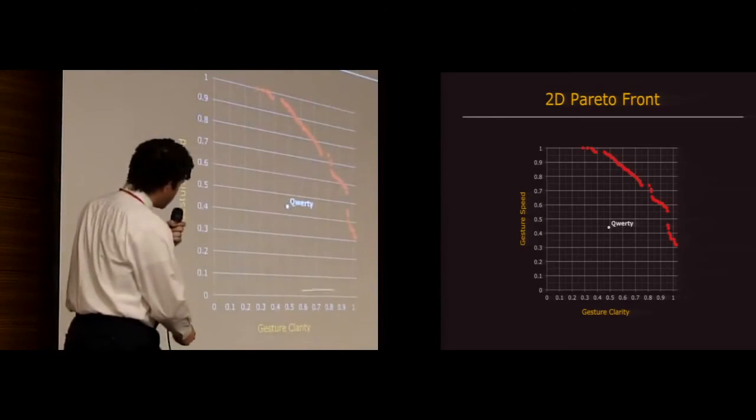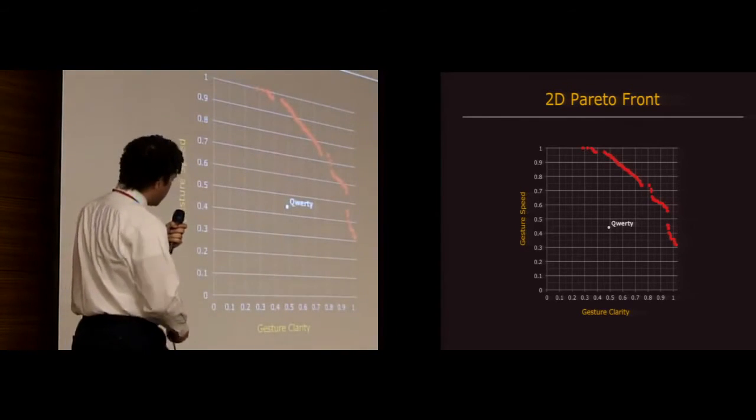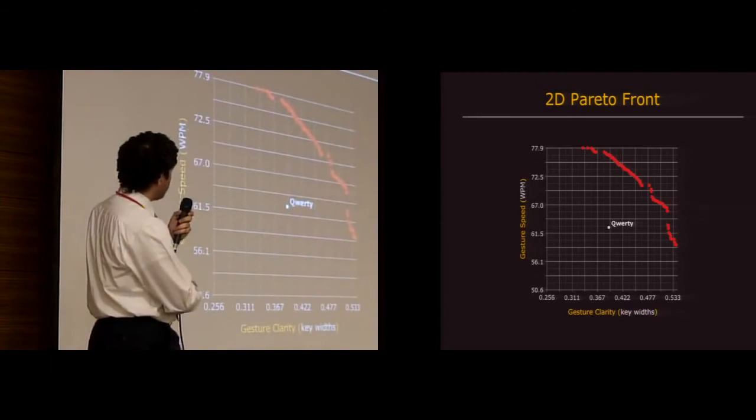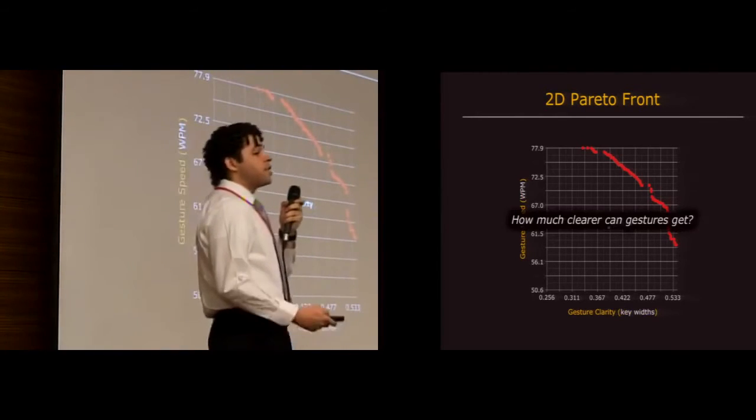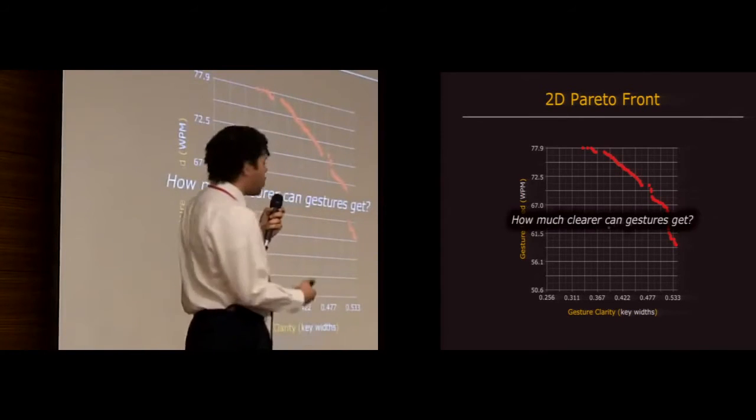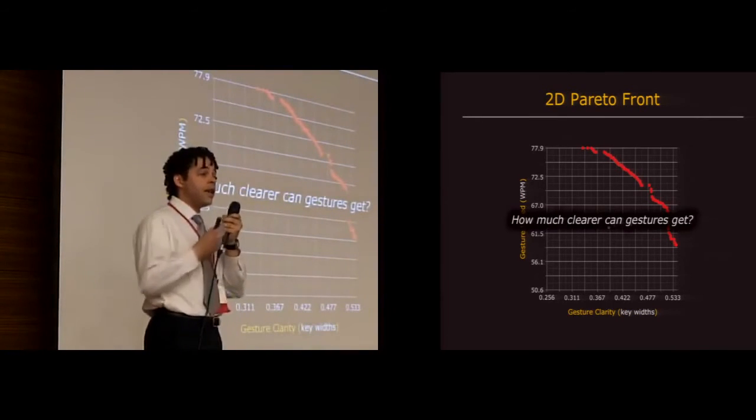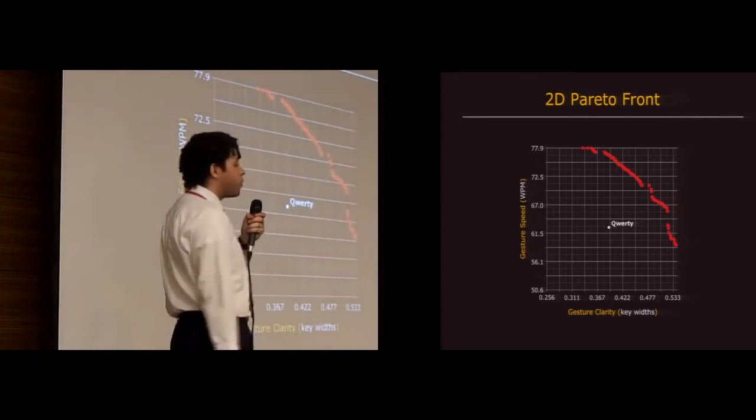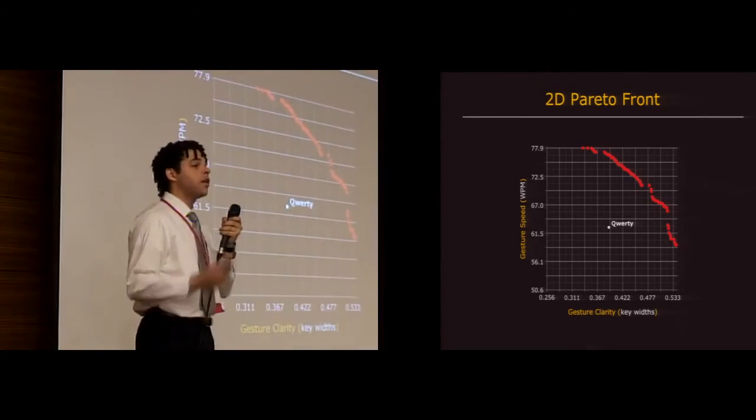So now if we sort of un-normalize our axes and put them in terms of their actual units—so clarity, distance in key widths, speed in words per minute—we get the answer to our second key question, which is: how much clearer can the gestures actually get? How far can we go? If you do the math here, you can actually achieve about a 40% increase in clarity compared to QWERTY.